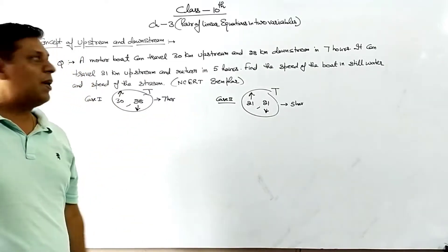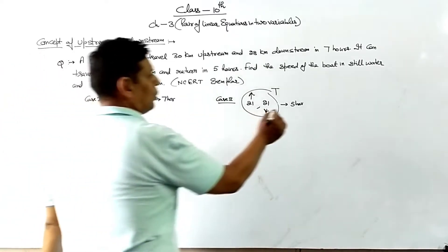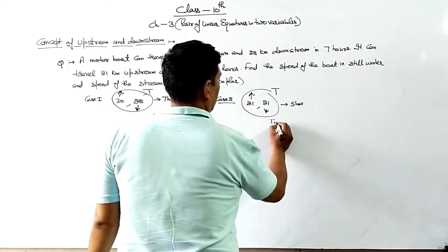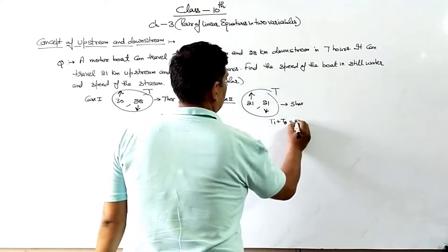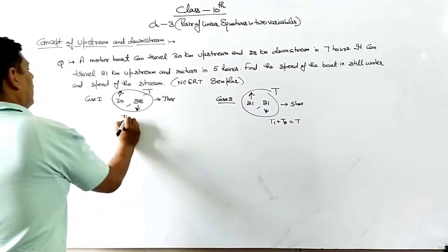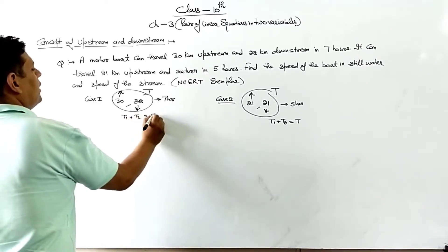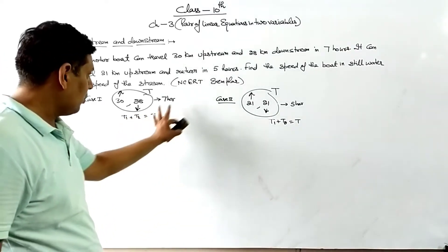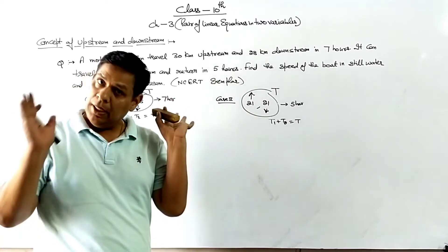So these are the two cases. The total time is given: T1 plus T2 is equal to T, where T1 is the time taken upstream and T2 is the time taken downstream. This is the total time given.